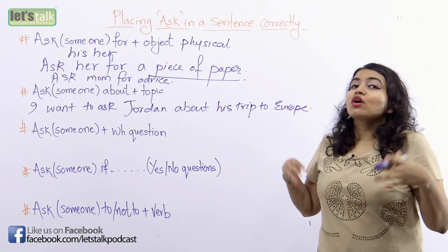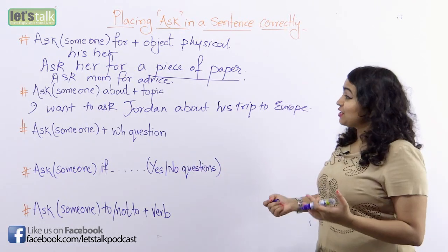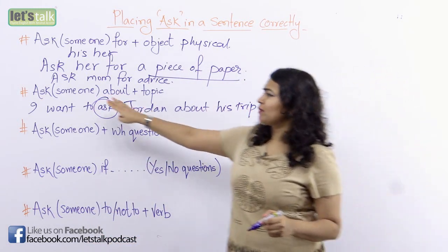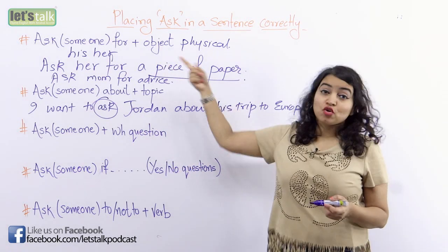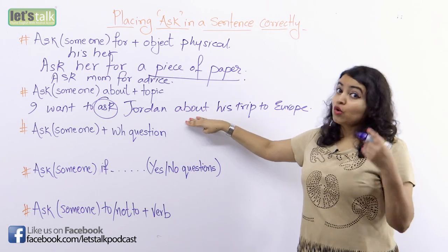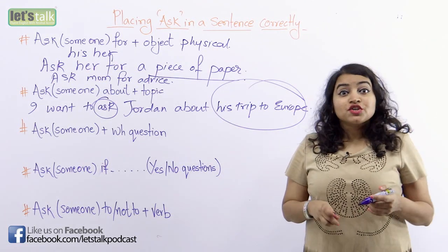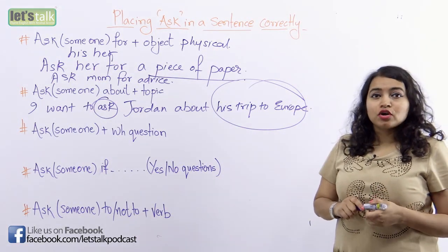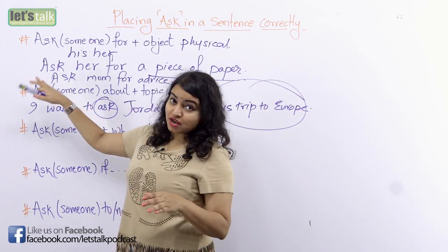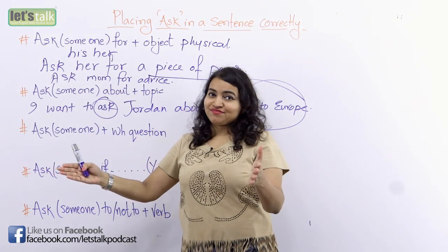When you want to have a conversation about something, you use the verb 'ask', followed by someone — a name or 'his' or 'her' — then 'about', and what you want to talk about. For instance: 'Ask Jordan about his trip to Europe', or 'Ask your mom about her shopping spree.' That is the format when you want to discuss or ask about a topic.